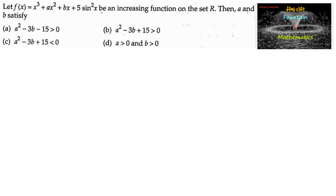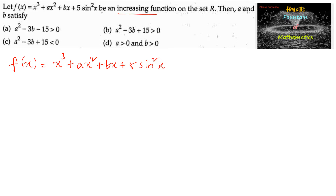Let f(x) = x³ + ax² + bx + 5sin²x be an increasing function on the set R. Then a and b satisfy a certain condition. Since f is increasing on R, it is given that f'(x) > 0 for all x belonging to R.